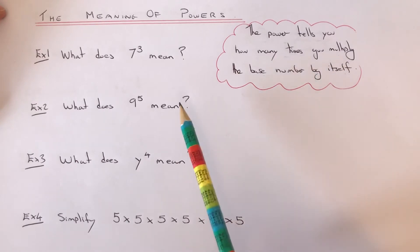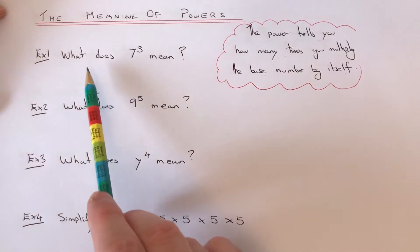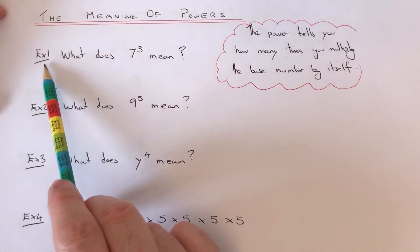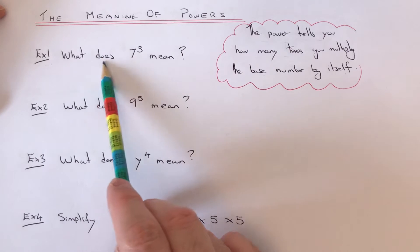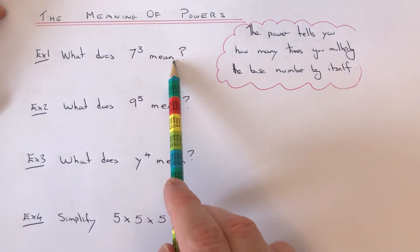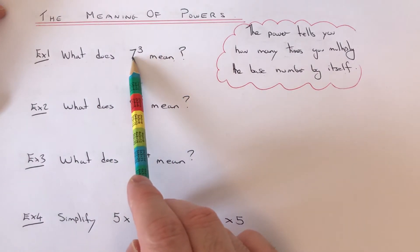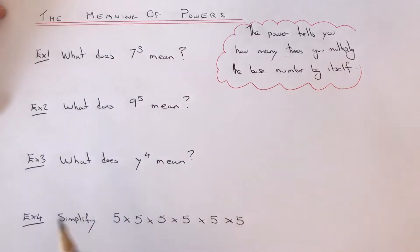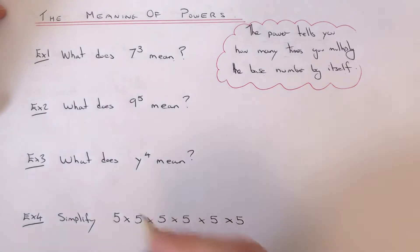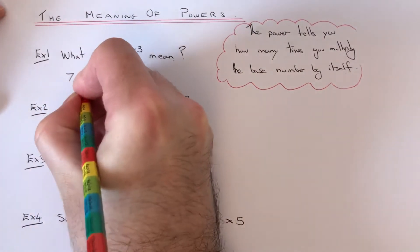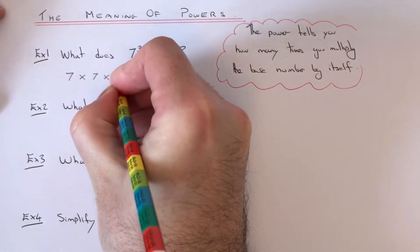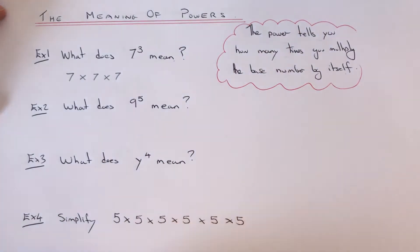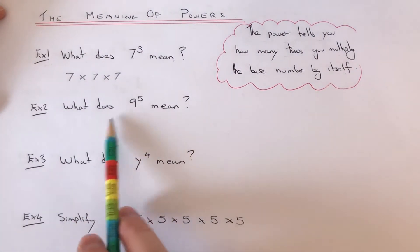Let's have a look at example one. What does seven cubed mean? Seven is our base number and the power is three, so this means we need to multiply the 7 by itself three times — so it's seven times seven times seven.